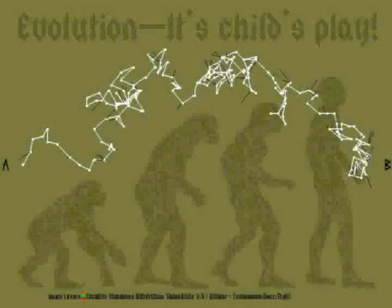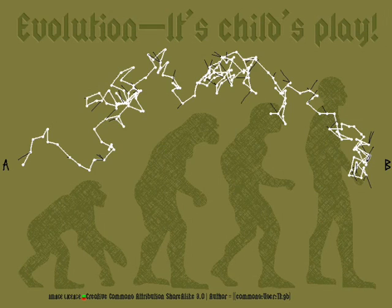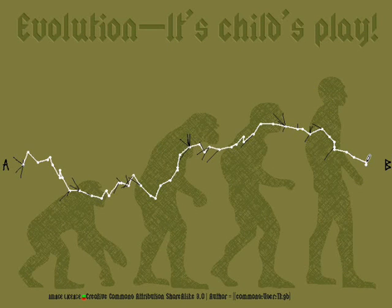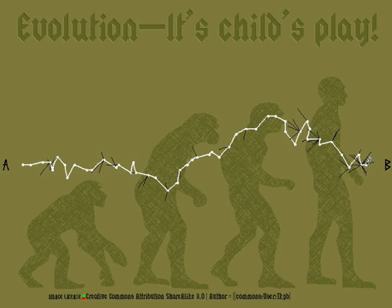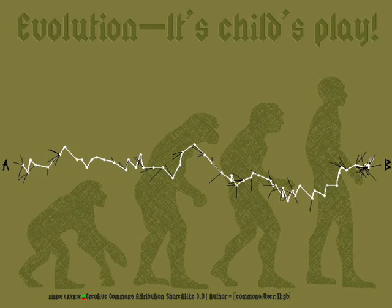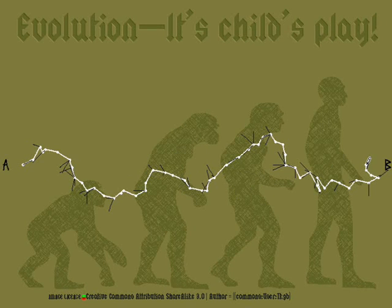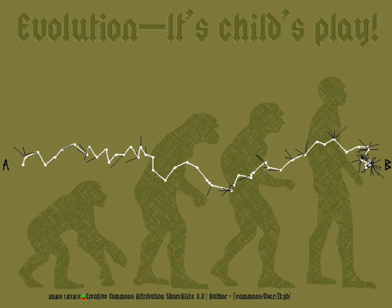Evolution is not an intelligent being; it has no purpose — it just acts. Adaptation can be achieved in many different ways, and only one thing matters: whether the change is beneficial. Here are a few examples of different evolutionary paths, first at 50%, the rest at 100% rate of natural selection.